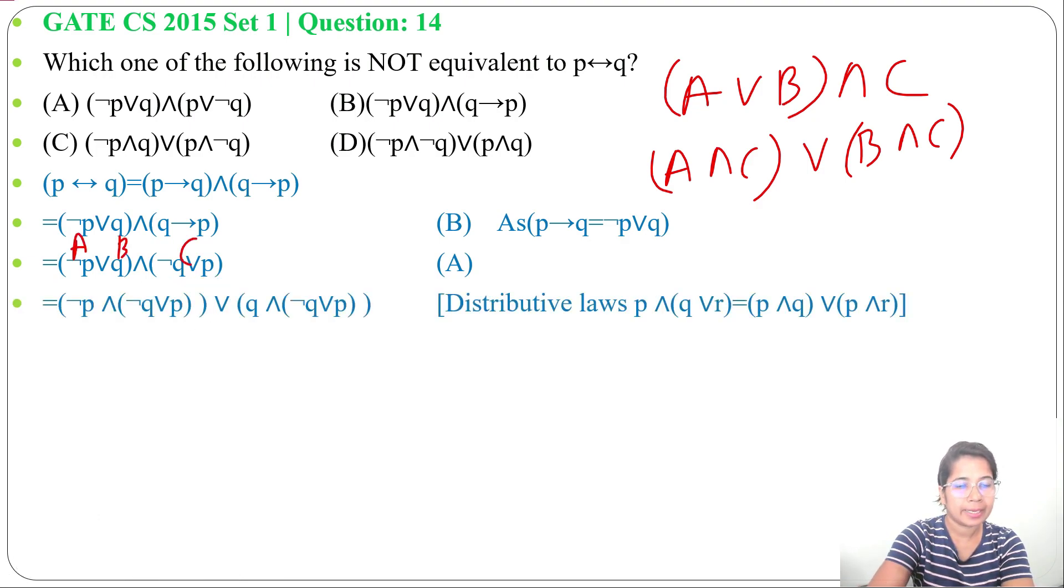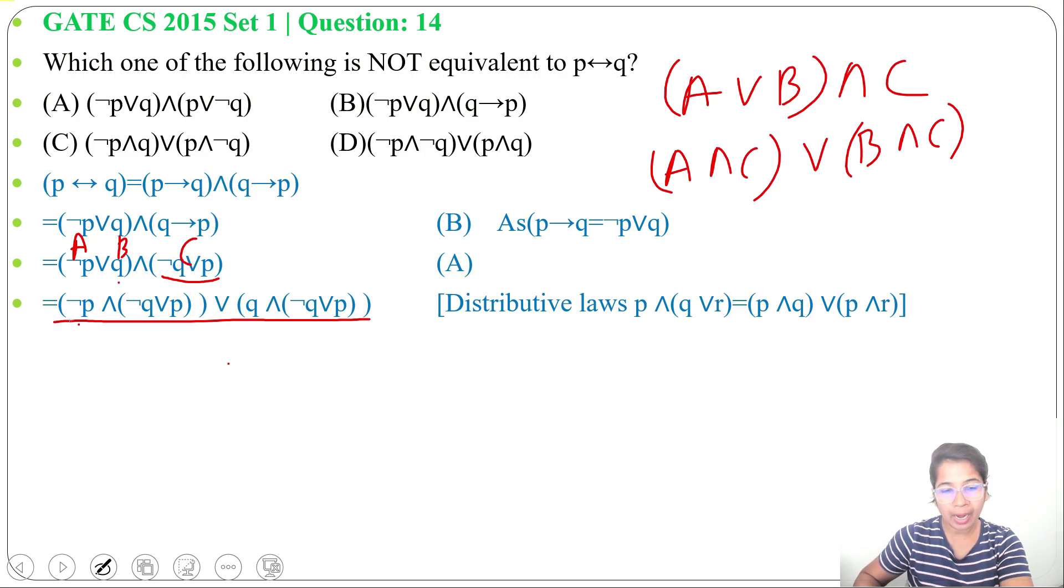Now we can write negation P and negation Q or P or Q and negation Q or P. Again we can apply distributive law here. So negation P and negation Q or negation P and P or Q and negation Q or Q and P.